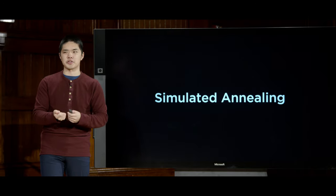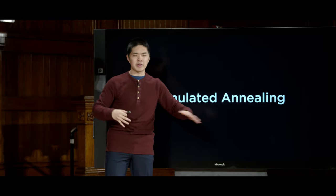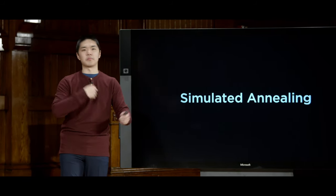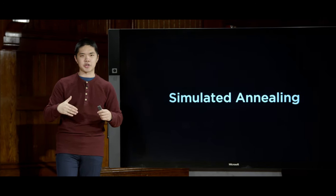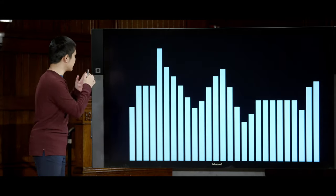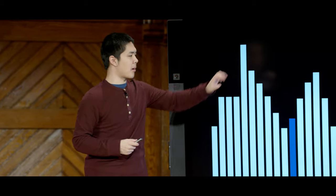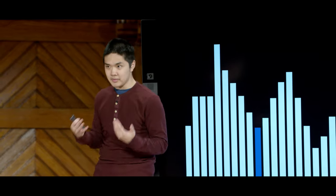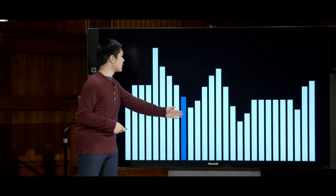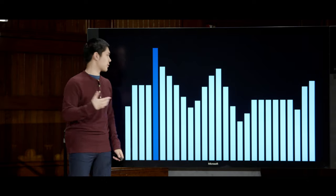In simulated annealing, we simulate a high-temperature system where things move randomly, then gradually decrease that temperature until we settle at a solution. If we're looking for a global maximum starting at an initial state, traditional hill climbing always picks the higher neighbor. But to find the global maximum, we must sometimes make bad moves — moves that temporarily worsen our situation — so that later we can find our way up to the global maximum.